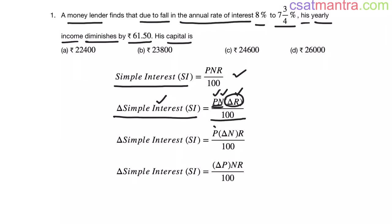Similarly, when P and R are constant and number of years are changing, in that case, change in simple interest is equal to P delta N R by 100.